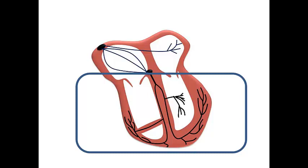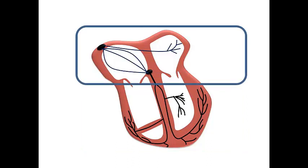We all speak about ventricles as the only chambers prone to infarction. When we speak about anterior STEMI, inferior STEMI, or lateral STEMI, we speak about the corresponding walls of the left ventricle, and sometimes the patient may develop RV infarction, which we have spoken about before. But many of us forget the atria, which are also chambers inside the heart and are prone to infarction.